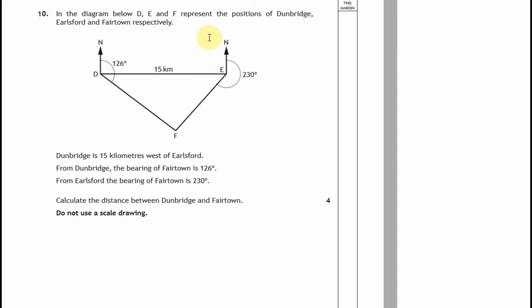In the diagram below, D and F represent positions of Dunbridge, Ellsford and Fairtown. Dunbridge is 15 from Ellstown. Once again, don't need to write any of the information that is on here. Calculate the distance between Dunbridge and Fairtown, distance between D and F. So call that X.